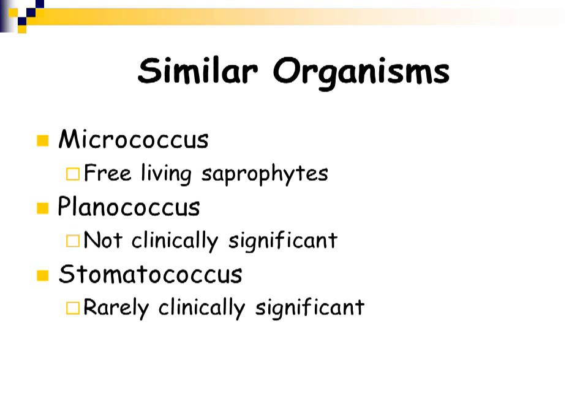There are some similar organisms to the staphylococcus. There's the genus Micrococcus, which are free living saprophytic bacteria, as well as Planococcus and Stomatococcus. Planococcus and Stomatococcus are usually not clinically significant — in other words, they have not commonly been associated with causing human disease.